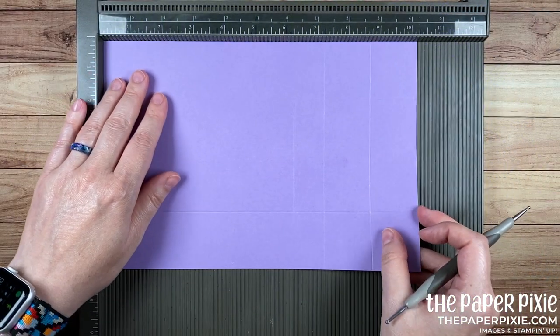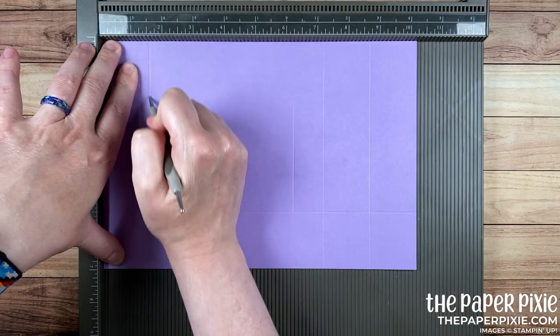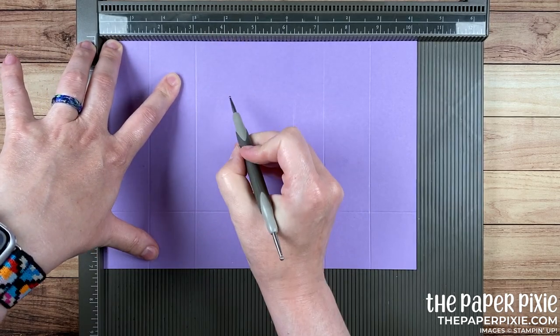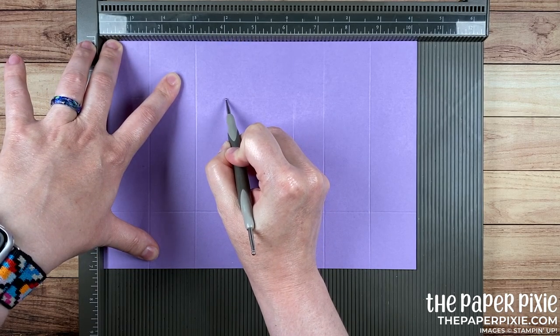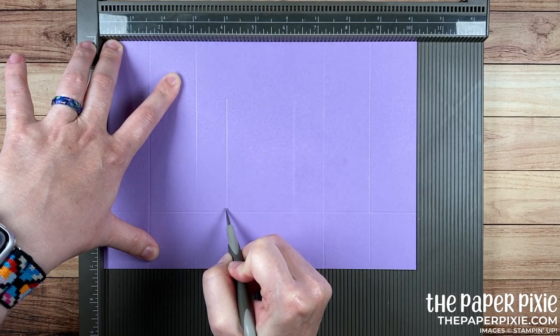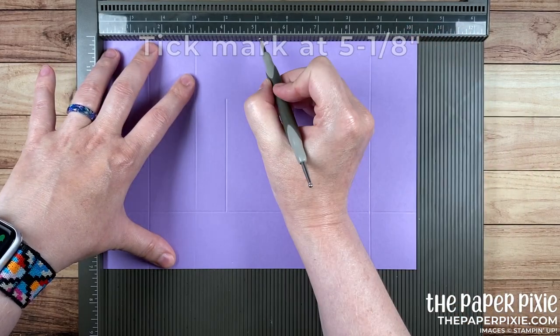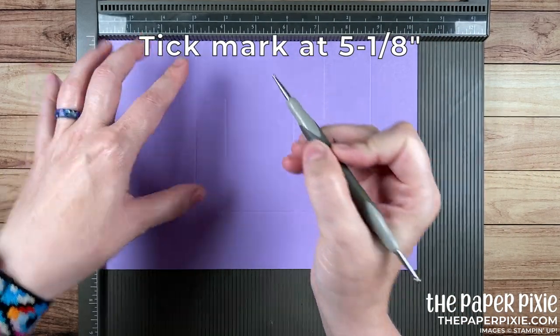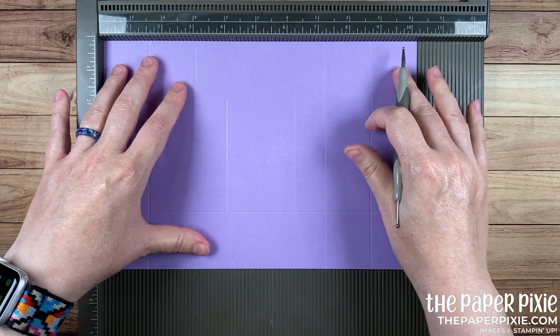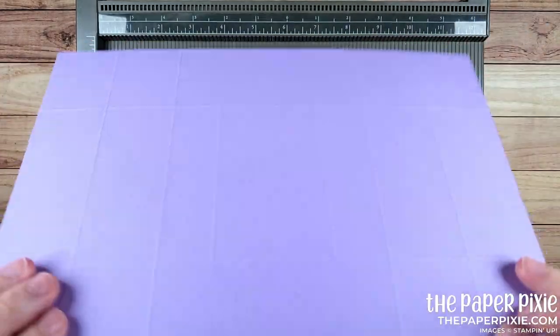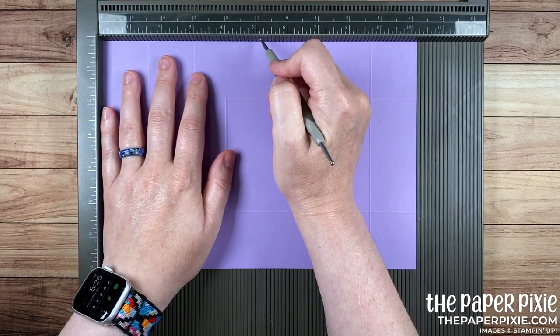So I'm going to rotate it and we're going to score this again at one and a half, three and then again at four but only between those two horizontal score lines. While we've got it on the ten and a quarter inch side I'm going to make a little tick mark at five and one eighth and I'm just taking the ball tip of my stylus and pressing down right at five and one eighth. I'm going to flip this over and make a tick mark again at five and one eighth.